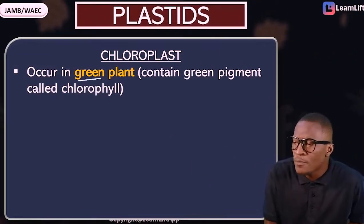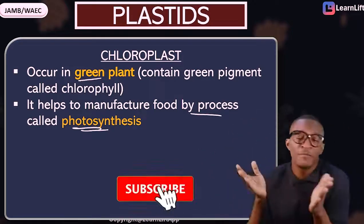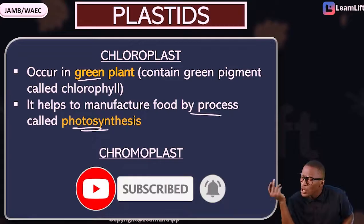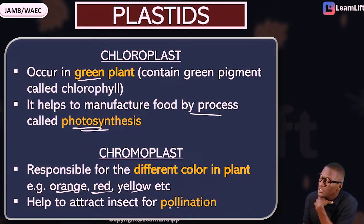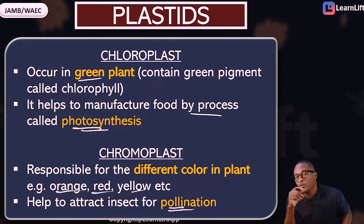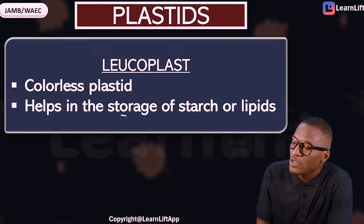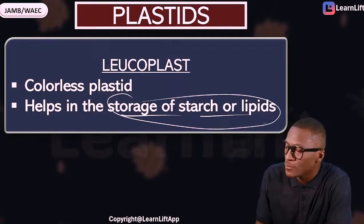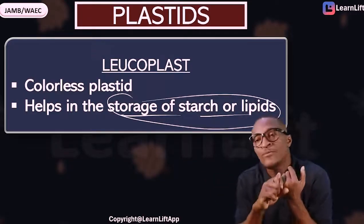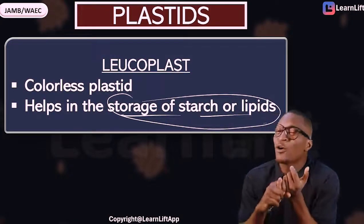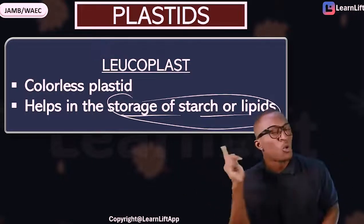Chloroplasts occur in green plants, contain green pigment, and are responsible for photosynthesis — the process of manufacturing food. Chromoplasts have different colors — orange, red, yellow — and their function is to attract insects for pollination. Leucoplasts are colorless plastids whose function is the storage of starch or protein — i.e., food storage.